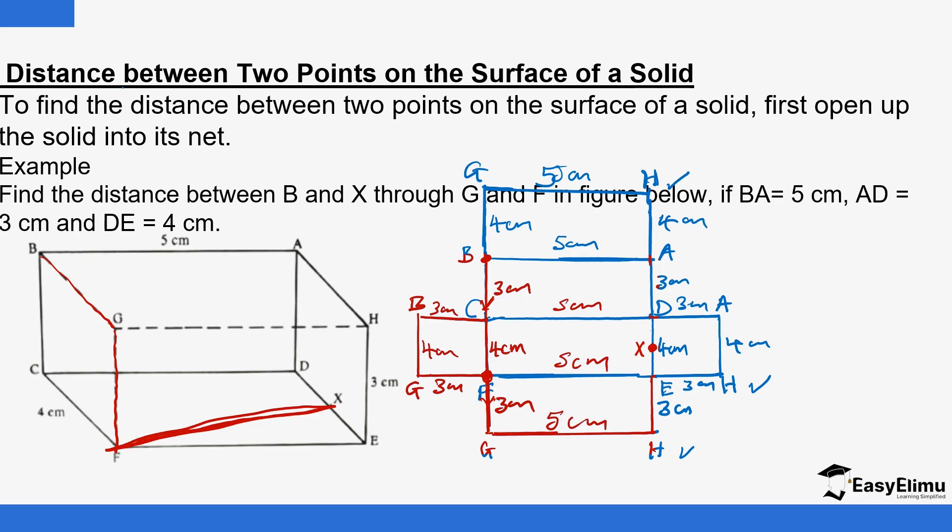So BG we have it. On the diagram you can see what BG is. It's like this length here, the 4 centimeters. So the length that you are looking for should be 4 centimeters and then the height which is 3. And then now there is the length FX. So that is what we need to find now using this net here. So the length FX is here.